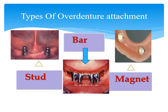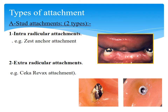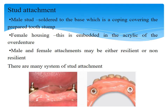The types of overdenture attachments can be bar type or stud type. The stud type attachments include two types: first, intra-radicular attachments such as the Zest anchor attachment, and second, extra-radicular attachments such as the Cica-Devax attachment. In general, the stud attachment has a male stud soldered to the base — a coping covering the prepared tooth stump — and the female housing is embedded in the acrylic of the overdenture. Male and female attachments may be either resilient or non-resilient.